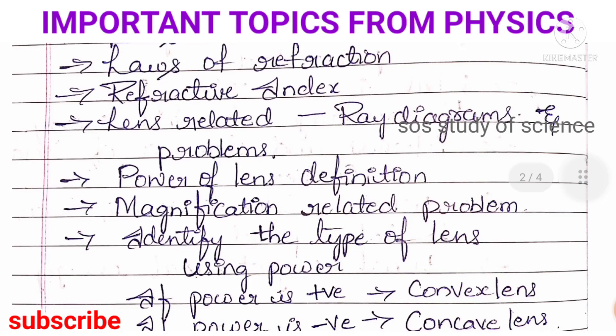You have to learn identifying the type of lens using the power. If power is positive, it is always a convex lens; if power is negative, it is always a concave lens. You must know about this. This is all about Light Reflection and Refraction. These concepts are very important — without fail, learn this. Don't forget to practice the example and exercise problems given in this particular lesson.